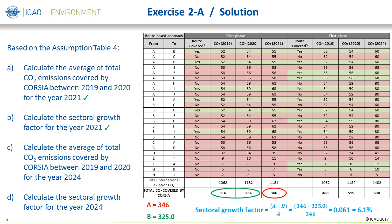Using the average of total CO2 emissions covered by CORSIA between 2019 and 2020 — what we just calculated in the first step — we can now calculate the sectoral growth factor for year 2021. As per Resolution A.39-3, Paragraph 11, the sectoral growth factor in a given year is equal to the total CO2 emissions covered by CORSIA in a given year, represented by the letter A, then subtracting the average of the total CO2 emissions covered by CORSIA between 2019 and 2020, also known as the sectoral baseline, represented by the letter B.